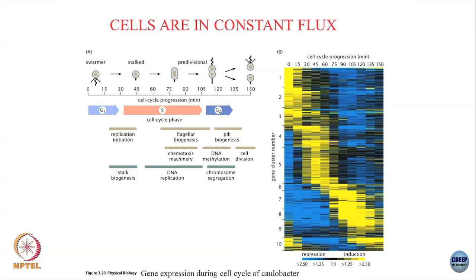For example, cluster 1 might be replication, cluster 2 might be biogenesis, and there are clusters for chromosome segregation, DNA replication, and so on. The colors represent regulation state: yellow is when genes are upregulated, blue is when they are downregulated. Not all of these are upregulated or active at the same time — clusters 8 and 9 are active towards the end of the cell cycle, while other clusters are active towards the initial phase.